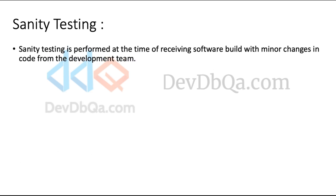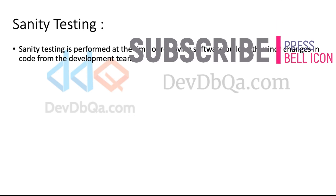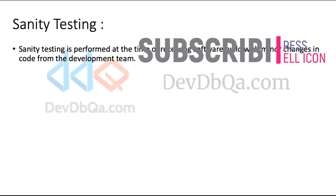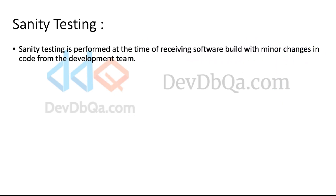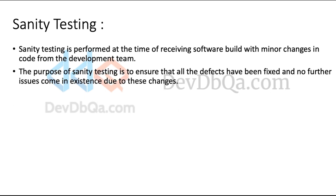Sanity testing is performed at the time of receiving a software build with minor changes in the code from the dev team. Smoke testing is performed at the very first step before the start of the testing lifecycle, whereas sanity testing is performed when we receive a build with some minor changes in the code.